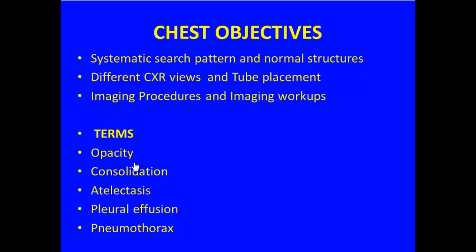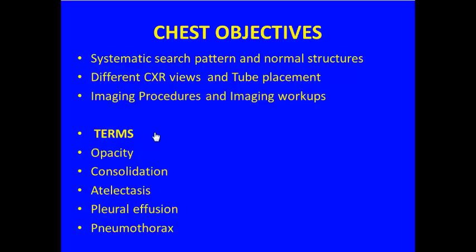That gives us a summary of all things we've covered with our chest objectives: systematic search pattern, normal anatomy, different chest x-ray views, tube placement, imaging procedures for draining fluids or biopsies, and imaging workups. You won't remember all of it, but the ACR appropriateness criteria on the website can be a real help, especially in your third year, for understanding how pathologic cases are evaluated.